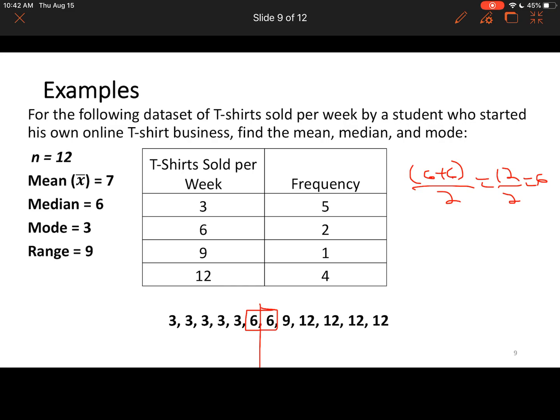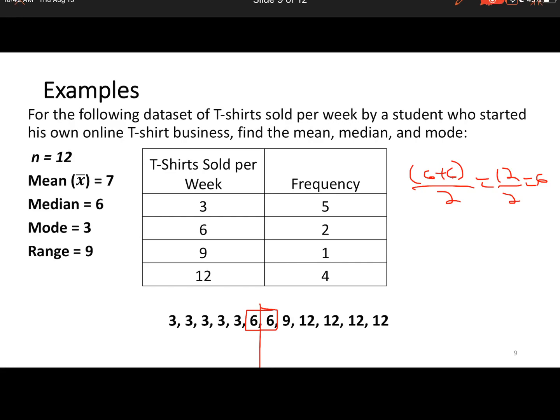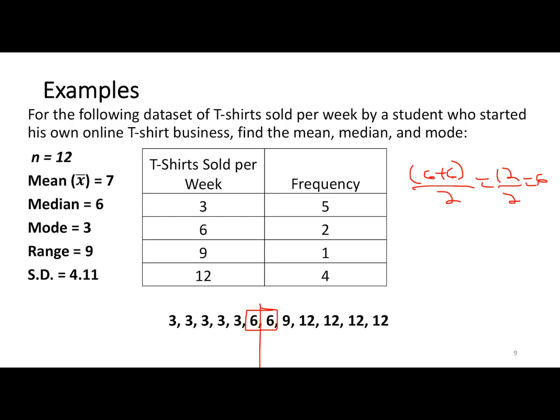The range: the maximum number of T-shirts sold was 12, the minimum was 3, so the range is 9. Standard deviation: use technology - take your list, put it in your table, and it'll calculate the standard deviation for you.